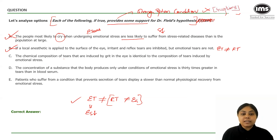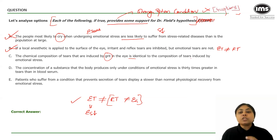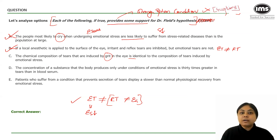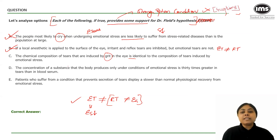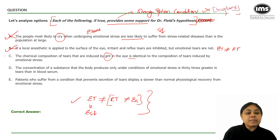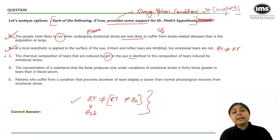Option C: 'The chemical composition of tears induced by grit — an irritant — is identical to the composition of tears induced by emotional stress.' Dr. Field's hypothesis is about the function and reason for tears, not their chemical composition. This option doesn't address the function difference between RT and ET, so it doesn't impact Dr. Field's hypothesis. Let's keep this on hold.